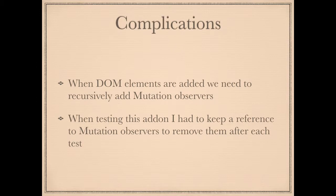There were some complications I had to think about quite a lot to get this thing to work. When things are removed from the DOM, it's quite easy to generate a test and forget about all the listeners — they get removed through garbage collection. But when I add DOM to the page, I don't really know how many DOM elements will be inside it. Mutation observers only work at the DOM level they're observing — the immediate children — so I had to drill down through the DOM and add mutation observers dynamically.